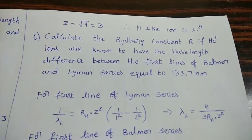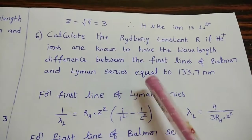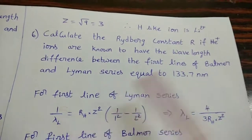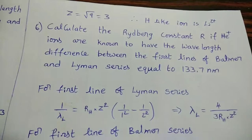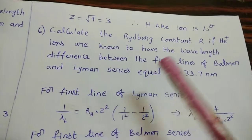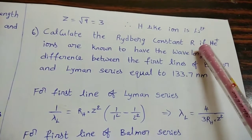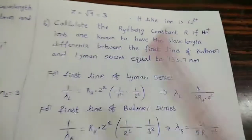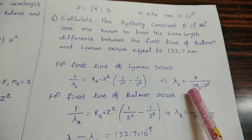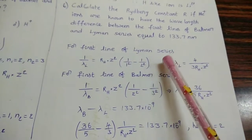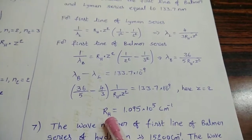See the next question. Calculate the Rydberg constant if He+ ions are known to have the wavelength difference between the first lines of Balmer and Lyman series equal to 133.7 nanometers. Similar to the previous question — the difference is that here we calculate the Rydberg constant R, whereas before we found Z. The wavelength difference between first lines of Balmer and Lyman series is given. The first line of Lyman series and first line of Balmer series are substituted into the formula. Solving gives the RH value.